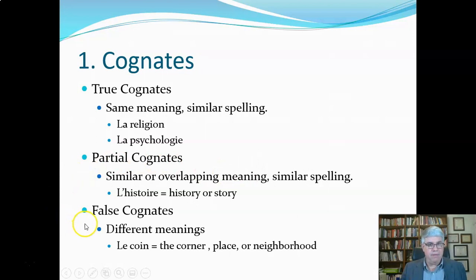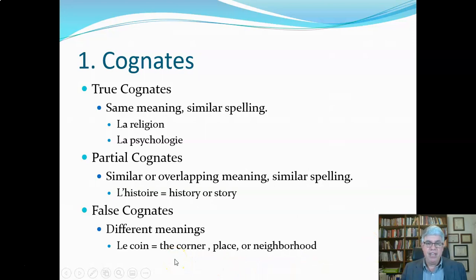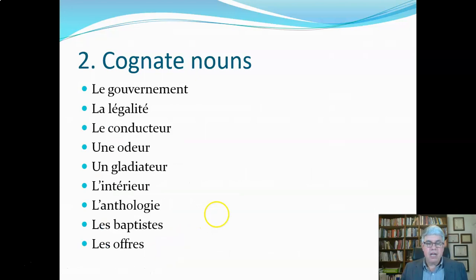The third category of cognates is false cognates — words that look like an English word but have a different meaning. For example, 'le coin' looks like the word for coin, but it's not. It means the corner, the place, or the neighborhood. That's a false cognate, sometimes called a false friend. It looks like a word you recognize, but it isn't. In fact, the word for coin is 'la pièce,' P-I-E-C-E.